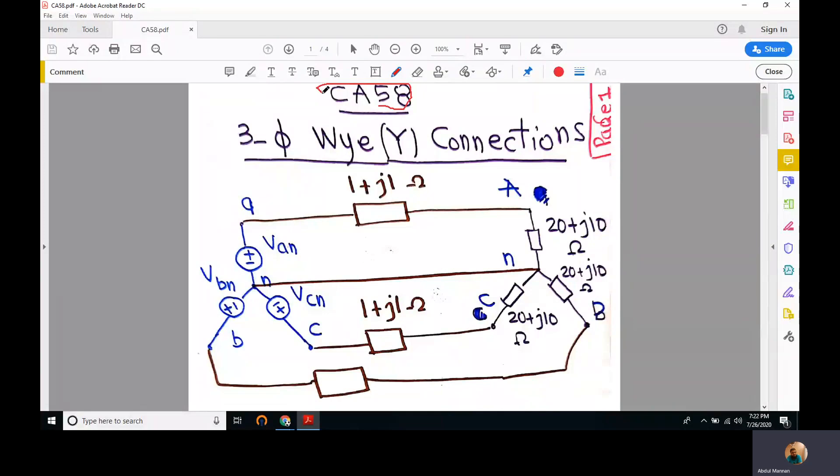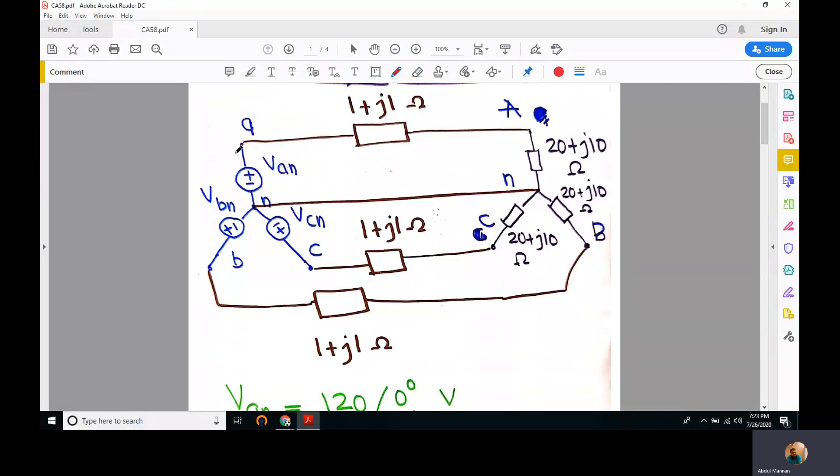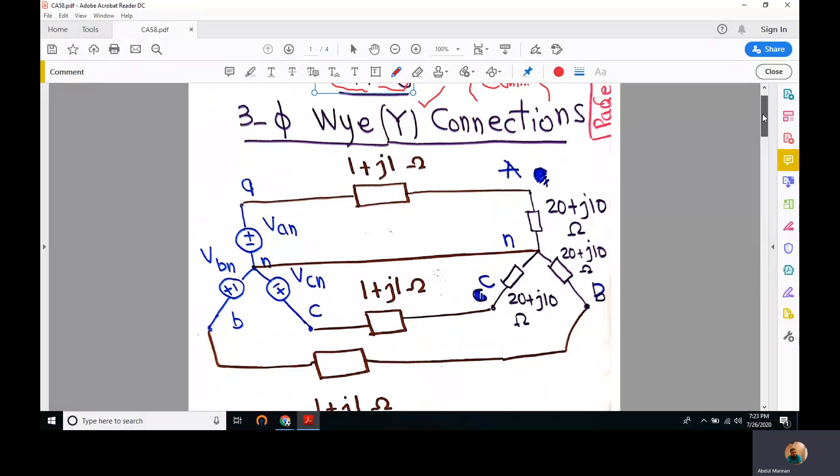Welcome to the 58th lecture. We are studying circuit analysis, and in this lecture we will continue studying three-phase wye connections. Wye connections are also called star connections, and they are called wye because the arrangement of source and load is in the form of letter Y, in fact an inverted letter Y.